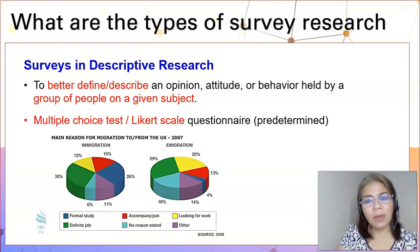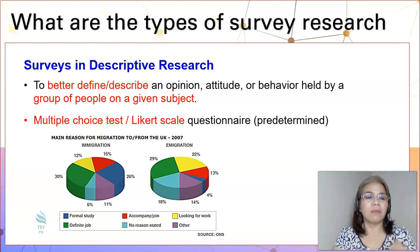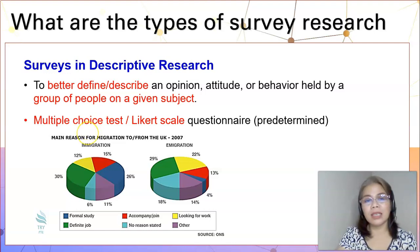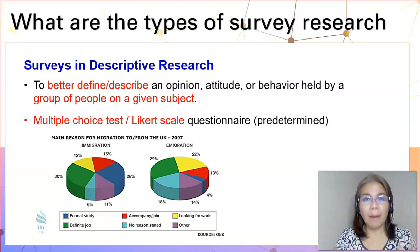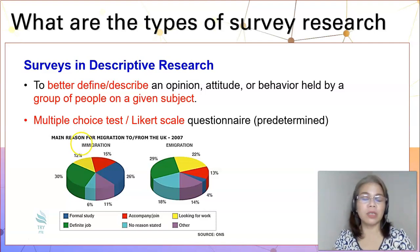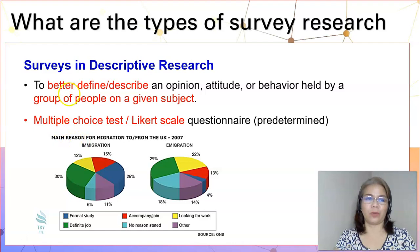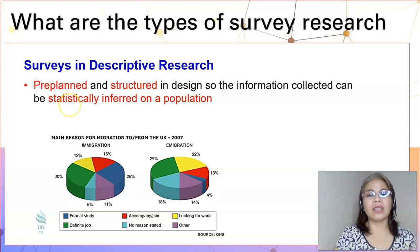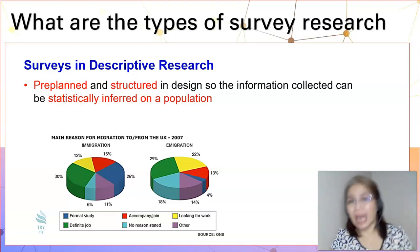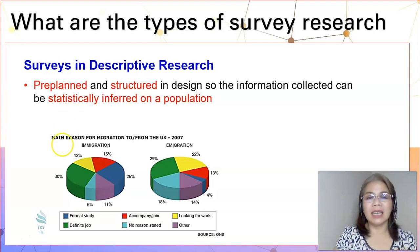The instrument used in descriptive research is a predetermined multiple choice test, usually measured in Likert scale — whether it's a three-point, five-point, or seven-point Likert scale. Whatever number of points you use in your Likert scale should always be supported with literature. When doing descriptive research, we usually pre-plan and structure the design so that the information collected from respondents can be statistically inferred to a target population.